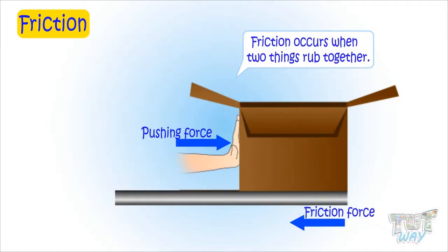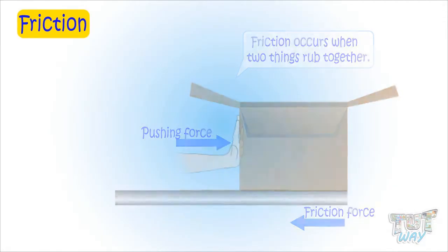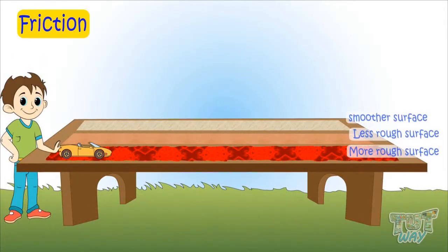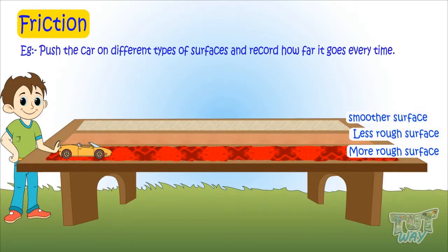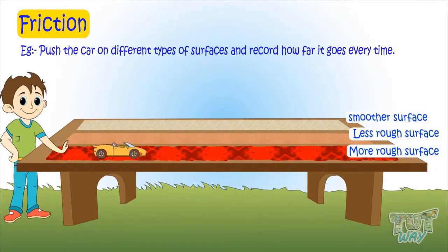Let's see it with an example. Take a toy car and push it on different types of surfaces from rough to smooth, and see and record how far it goes every time. First, push the car on a very rough surface like a carpet and see how far the car goes.